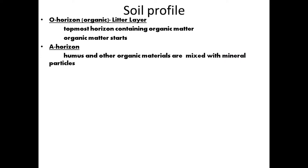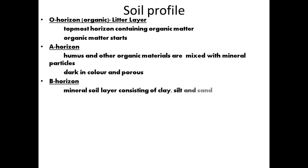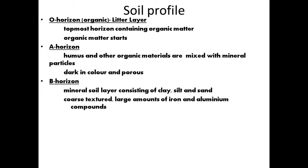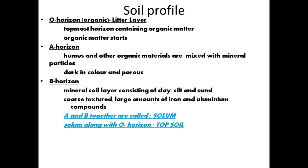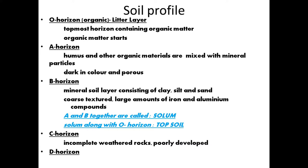The color of the A horizon is mainly dark and the texture is porous. Next is the B horizon, a rich mineral soil layer consisting of clay, silt, and sand — coarse in texture and containing large amounts of iron and aluminium compounds. A and B together are called the Solum, and the Solum along with the O horizon is known as topsoil, which is very important for increasing crop production. Then the C horizon consists of incompletely weathered rock, poorly developed and impermeable.